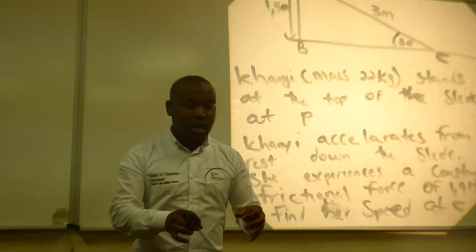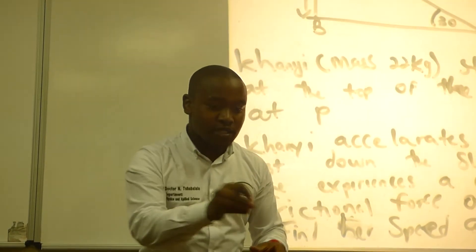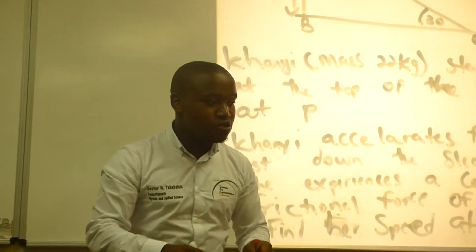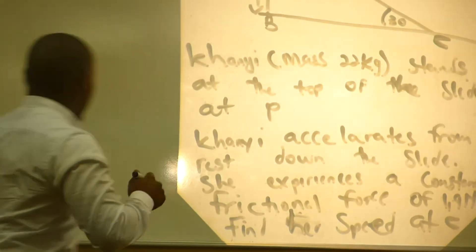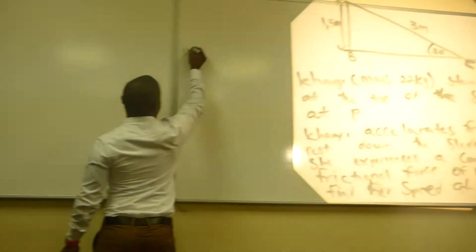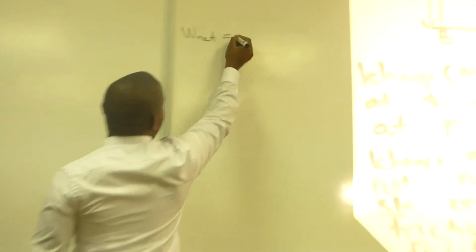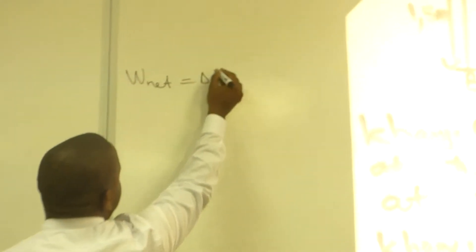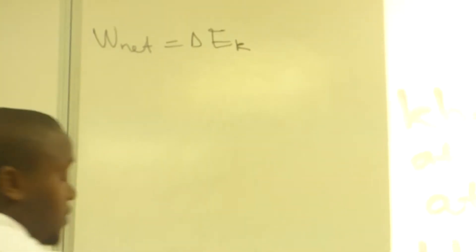We need to add a number of works before we get to the net work. Now let's write it down: the net work done on an object is equal to the change in kinetic energy.